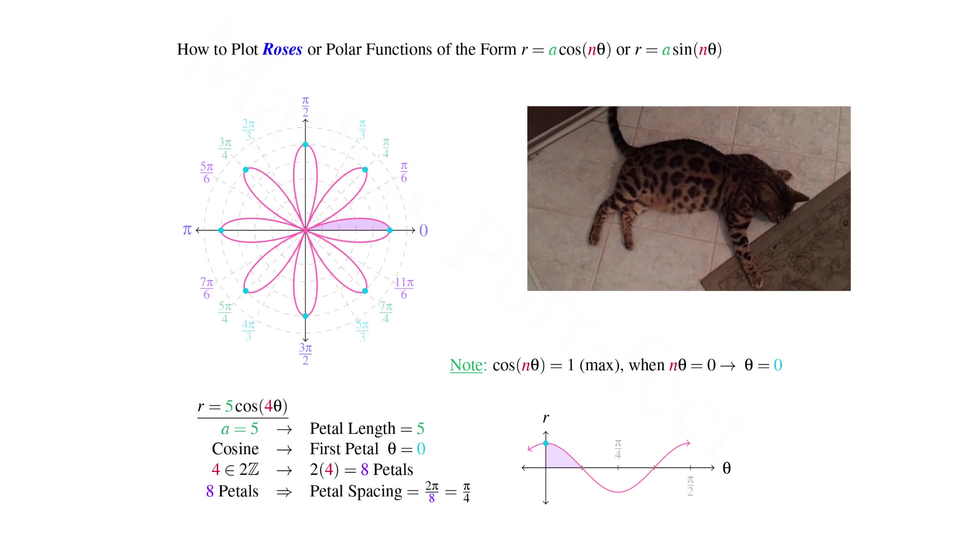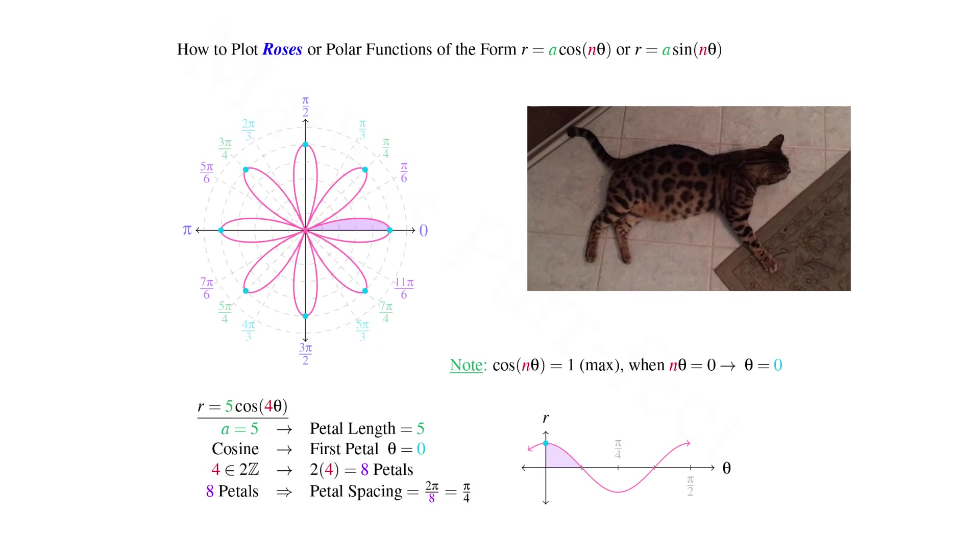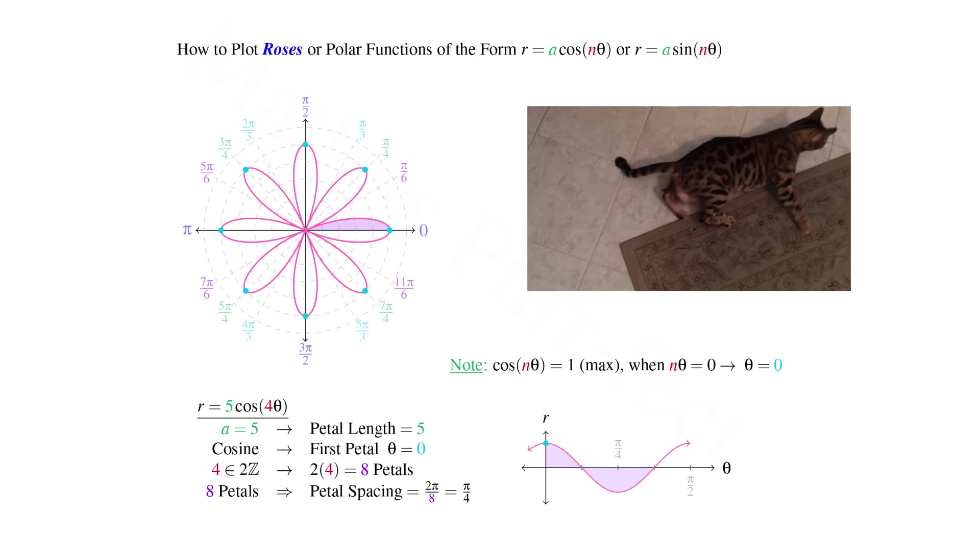We note on the Cartesian graph that between 0 and π/8 radians, we have half the area of our first petal in polar. Continuing between the next two zeros, we note that our radius once again is negative.